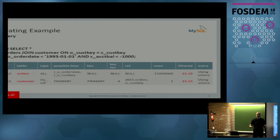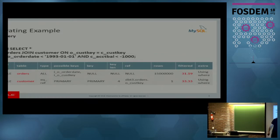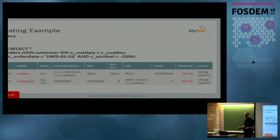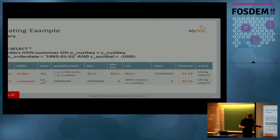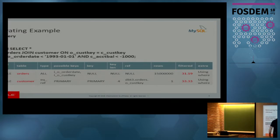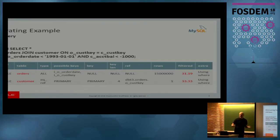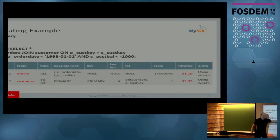That way it has a pretty good estimate on the size of the range. However, for the customer table, we don't have an index on the account balance column. So the optimizer does not have any information about the selectivity of this condition. What MySQL 5.7 does is make a guess — since this is a range, it guesses that probably one third could match, but this is just a guess with no basis except the type of expression.